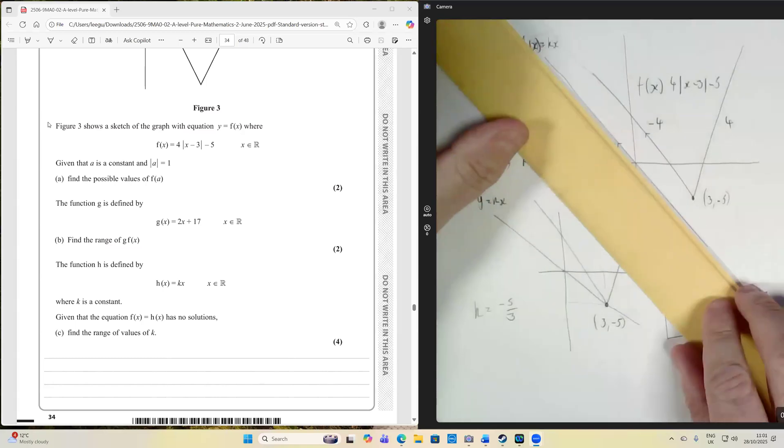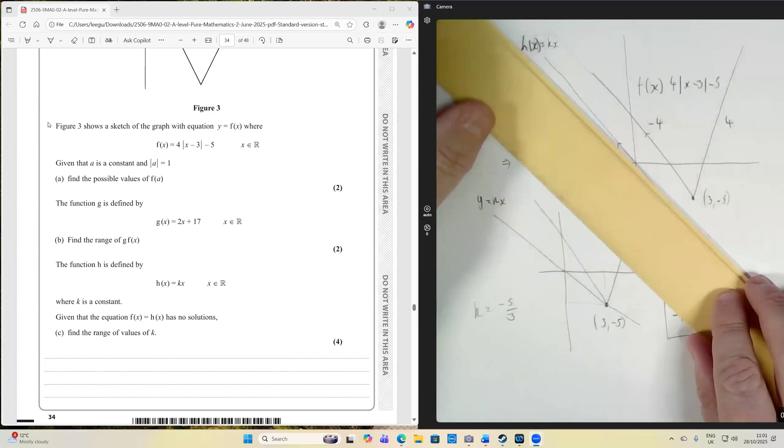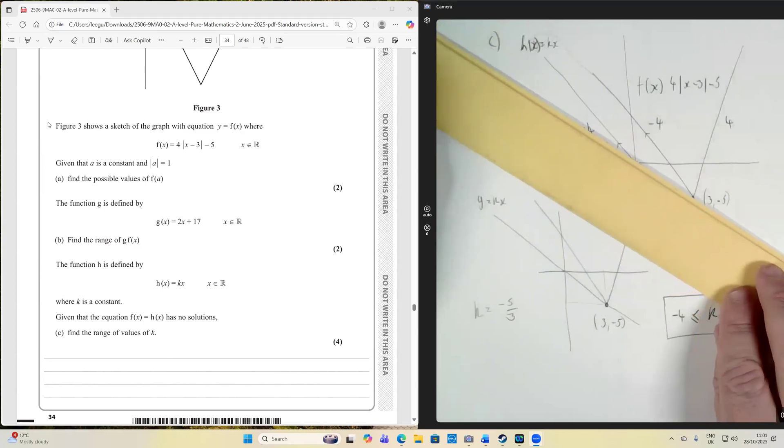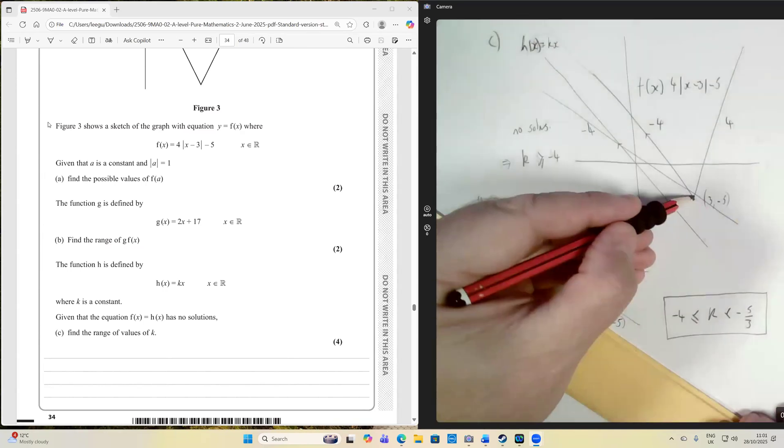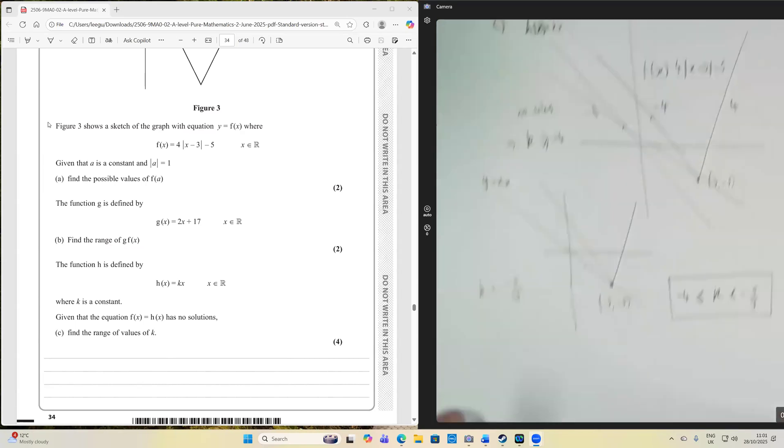So here we are at minus 4, no solutions. So k is getting bigger and bigger. It's now a gradient of, say, minus 3.5, still no solutions, up until we hit this point here when there's suddenly one solution, because if that line was there like that, we'd have the one solution there. And so what does that correspond to?